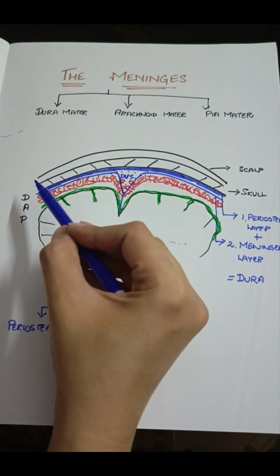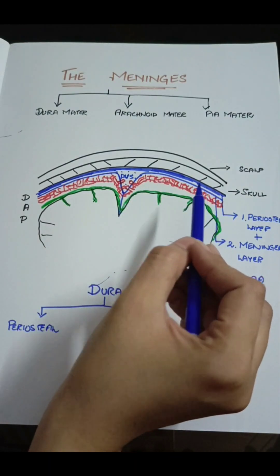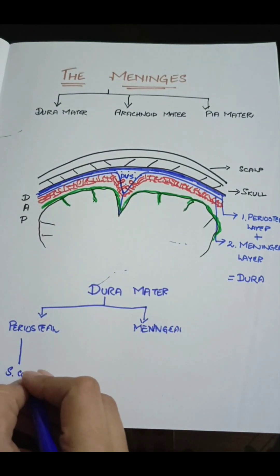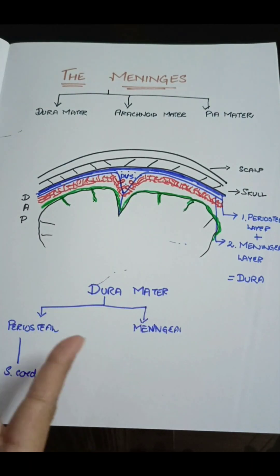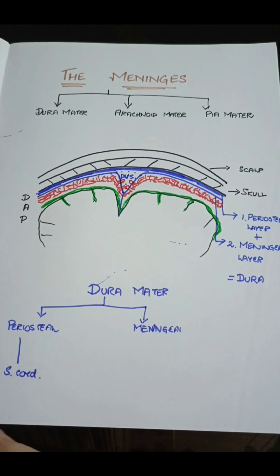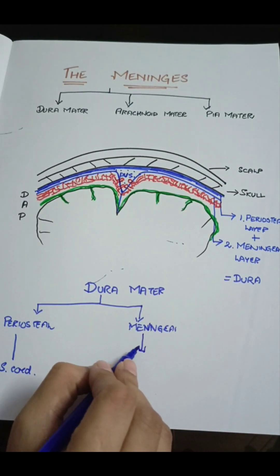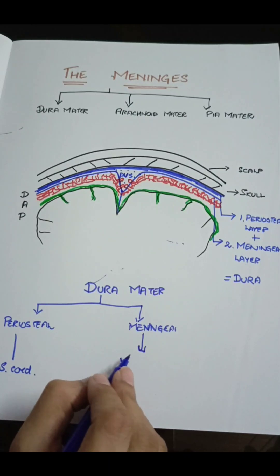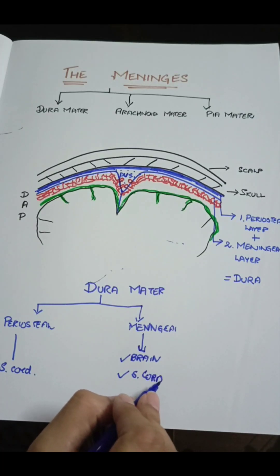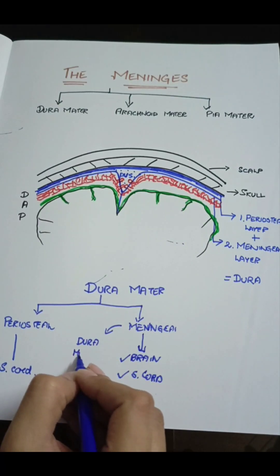The periosteal layer of the dura is known as the periosteal layer because it forms the periosteum of the skull. At the level of the foramen magnum, this layer is not continued into the spinal cord; instead it reflects onto the outer side of the skull and becomes continuous with the periosteum of the skull bone. So this layer of dura mater does not invest the spinal cord. On the other hand, the meningeal layer is the layer which invests both the brain and the spinal cord, and this is why it is also known as the dura mater proper.